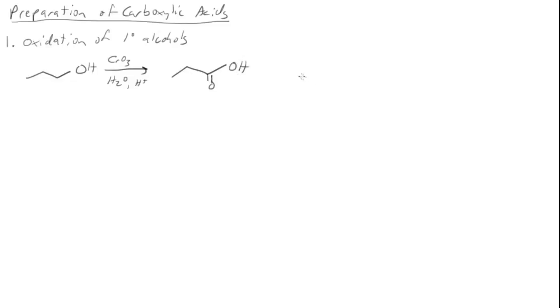And remember that will oxidize our alcohol all the way up to the carboxylic acid. If we wanted it to stop at the aldehyde, we had a reaction to do that too. Instead we would use pyridinium chlorochromate and that would oxidize our primary alcohol up to the aldehyde and it would stop there. If we want to oxidize all the way up to the carboxylic acid, we would do a Jones oxidation.